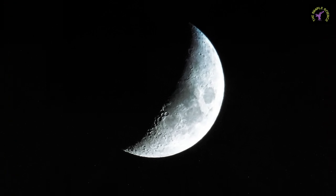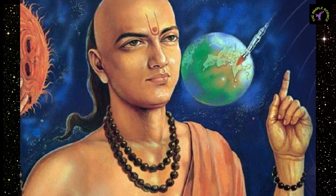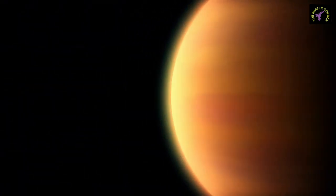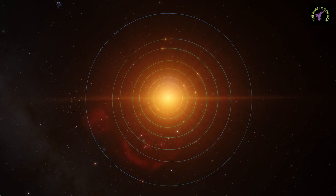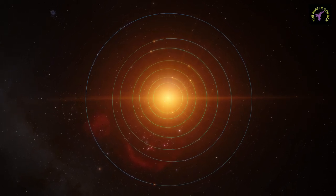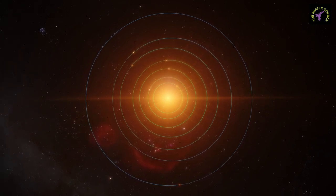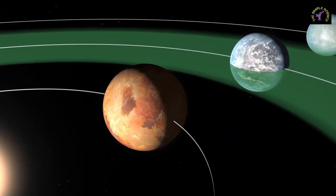In ancient India, Aryabhatta calculated many astronomical constants such as periods of planets and times of moon and sun eclipses. He propounded a planetary model in which Earth was taken as spinning on an axis, and periods of planets were given with respect to the sun.